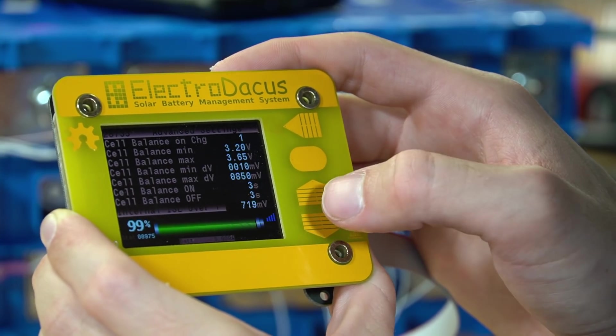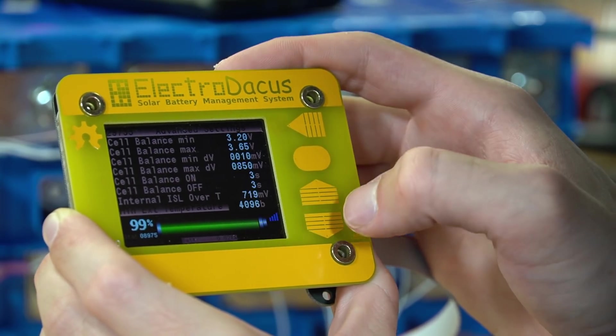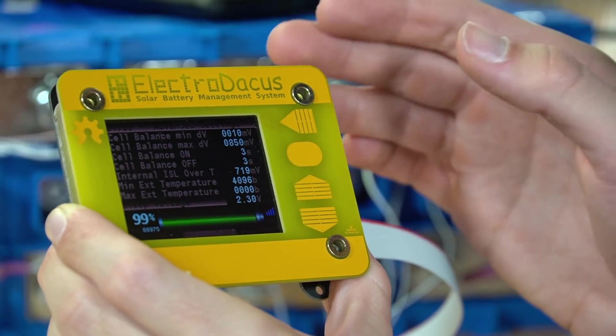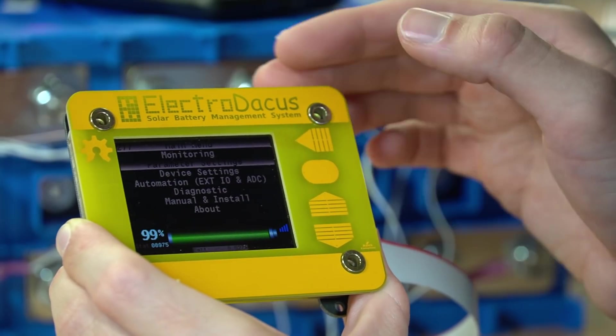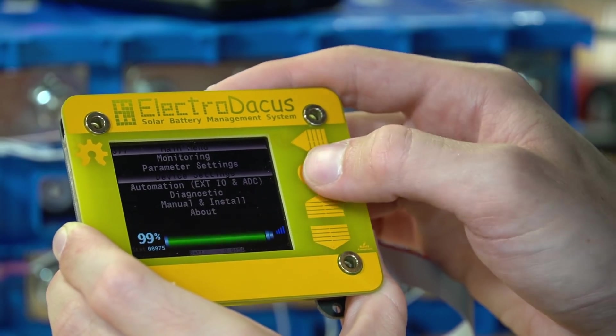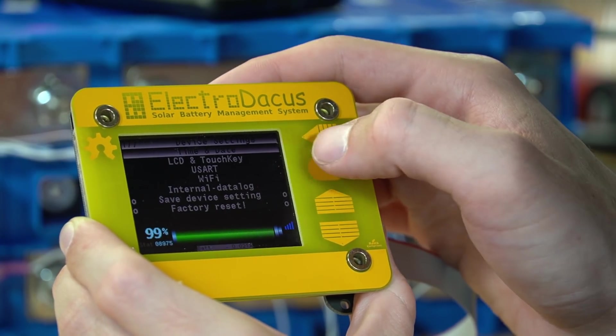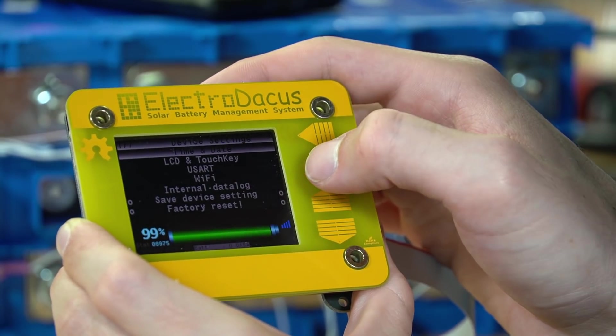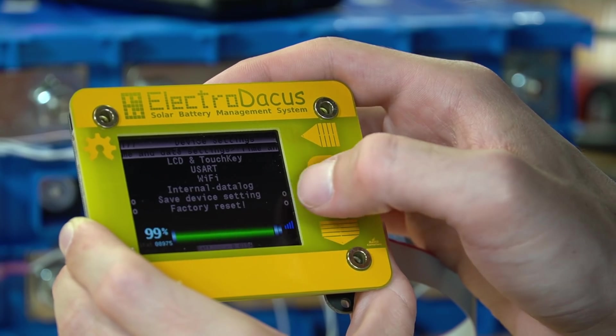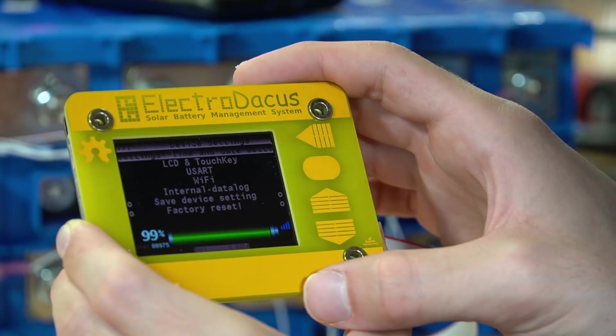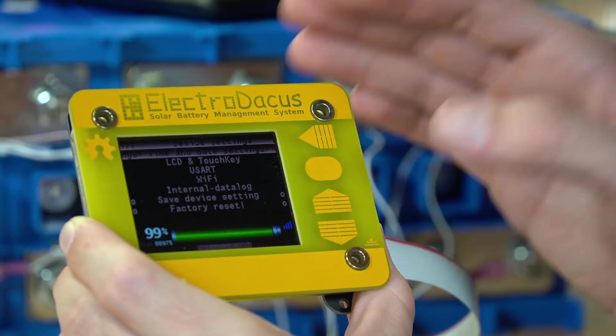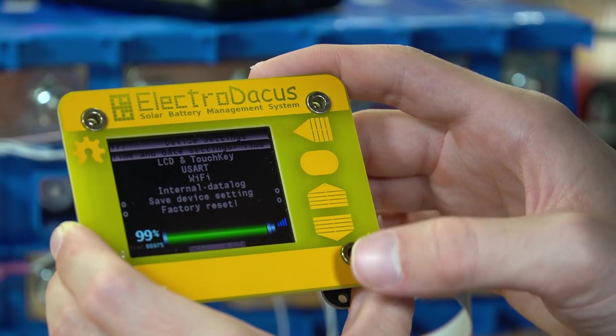You can change every setting on this. This is great, guys. He did a good job here. You can also add your own temperature sensor if you want as well. Now the settings are changed. So we're going to go back and we're going to see what the device settings is all about. So time and date, LCD and touch key, Wi-Fi, USR, internal data logs. So lots of cool data logging that you can do, which I need to connect to Wi-Fi and do that sometime. But I don't have that module yet. So we're going to have to do that in another video.